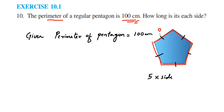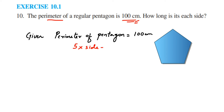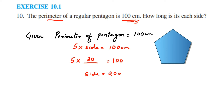So we are going to use this formula to get the answer. The formula is 5 times side, so 5 times side equals 100 centimeters. Now you can apply logic to get the value of side — 5 times what number gives us 100? Since 5 times 20 equals 100, the side becomes 20 centimeters. This is one way of doing it.